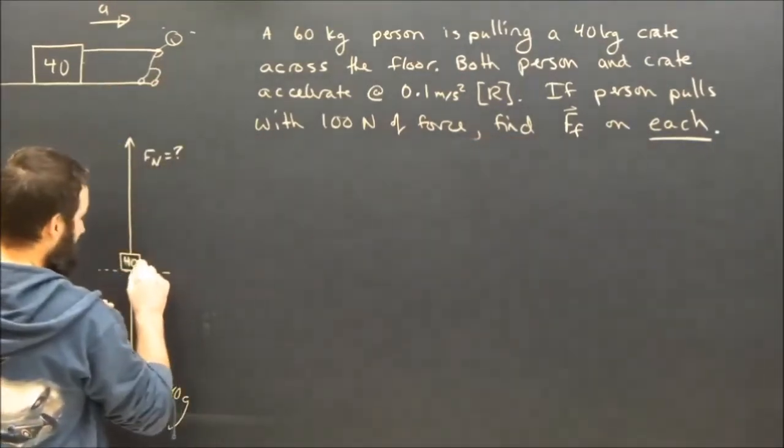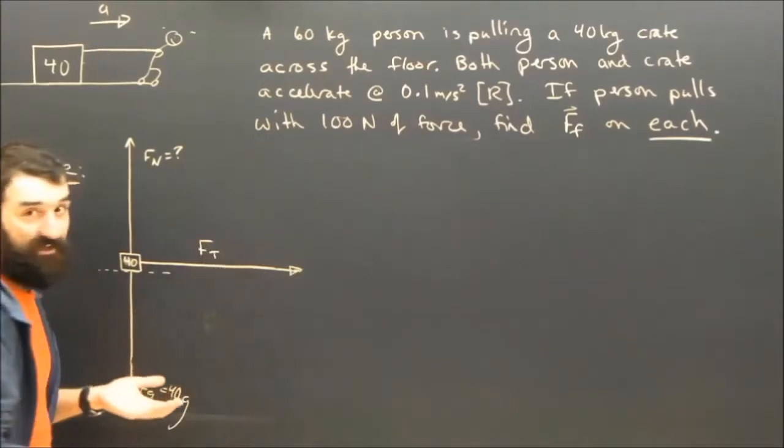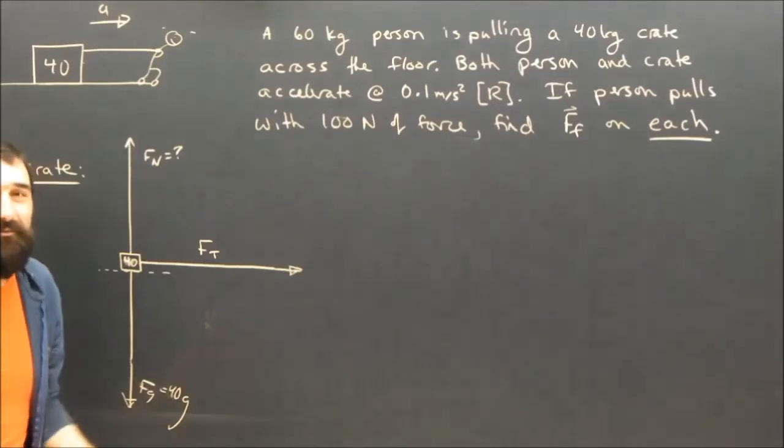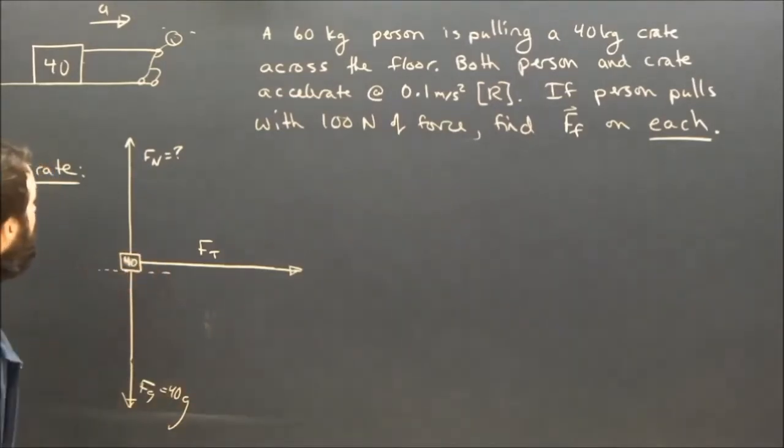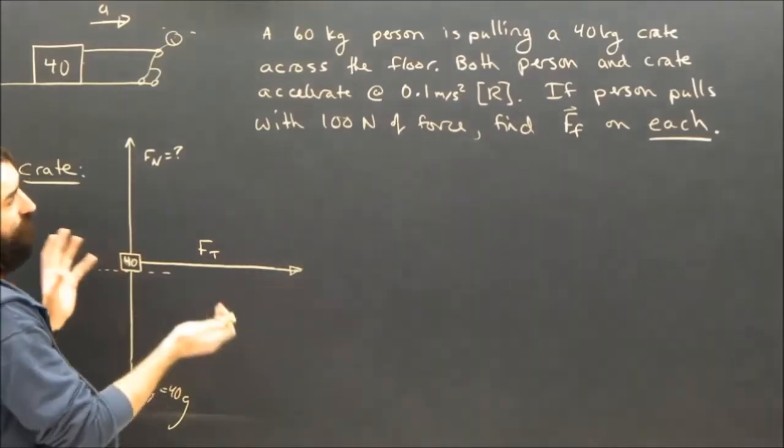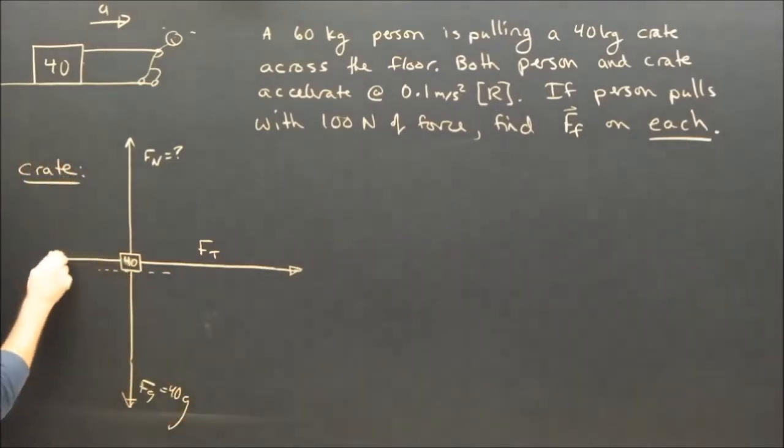Well, the person is pulling it to the right. He's pulling it using a rope, so I guess we should call it Ft, but if I called it Fa, it wouldn't change my answers, so it doesn't really matter too much. I'll call it tension, but of course, the box is sliding across the floor. It's slipping to the right. It's skidding to the right, so friction is going to try to stop it from sliding to the right, so there's got to be friction.